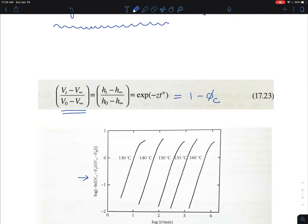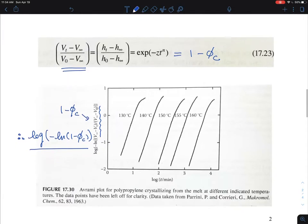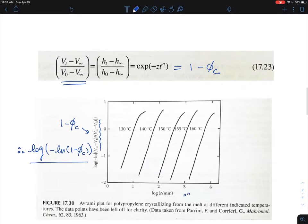1 minus (1-φc). So therefore what you see on here is common log of minus natural log of (1-φc), and then this is log t on those scales.